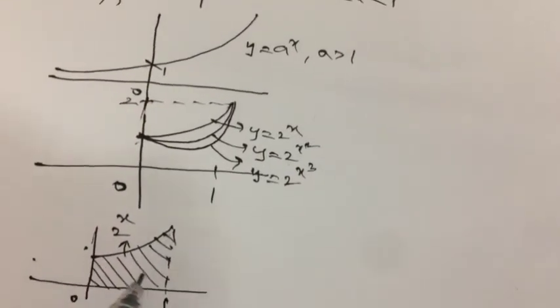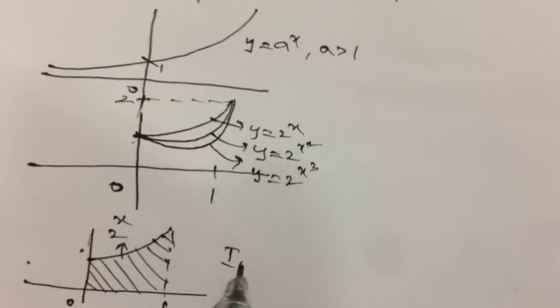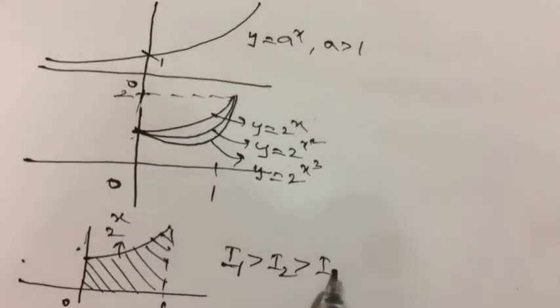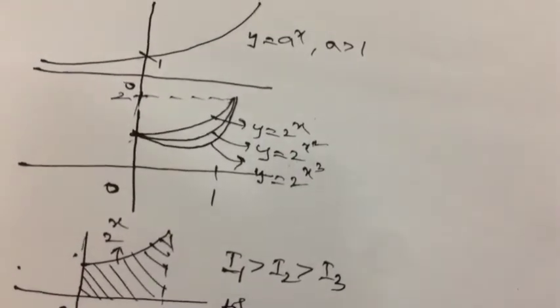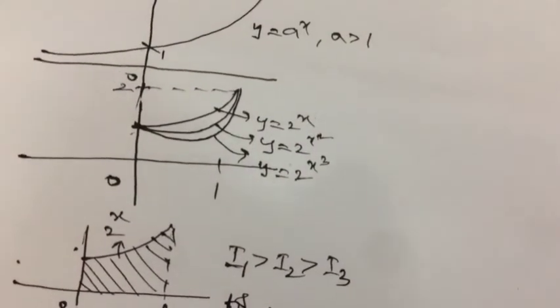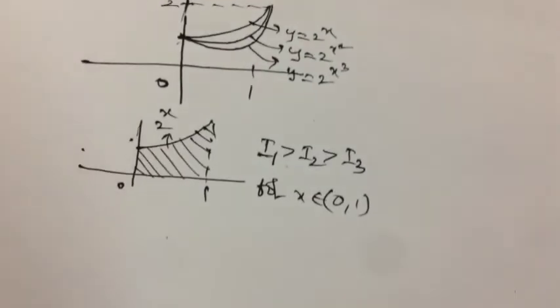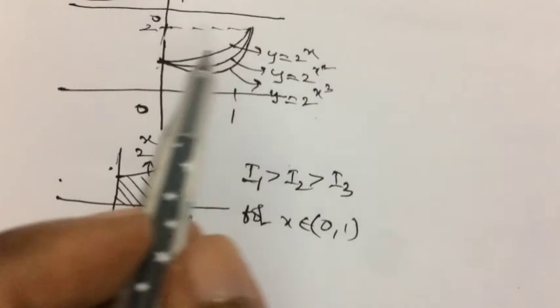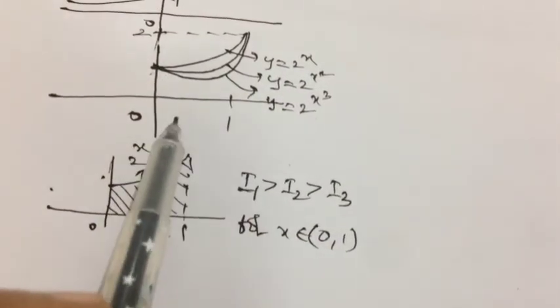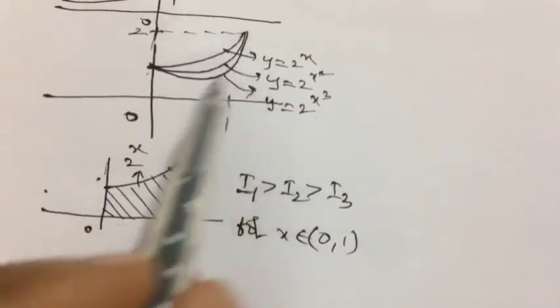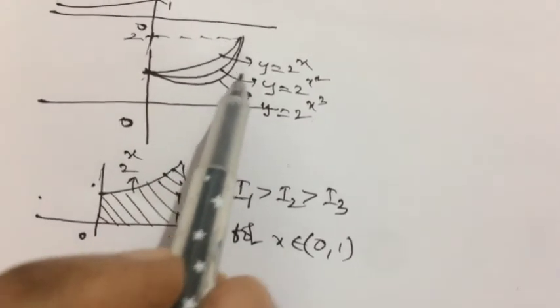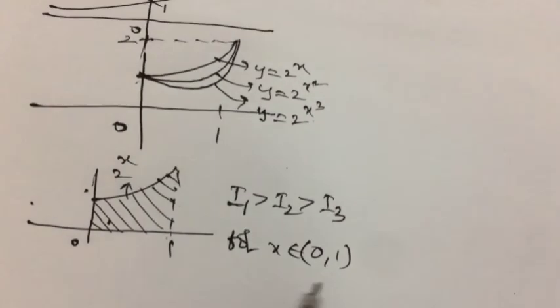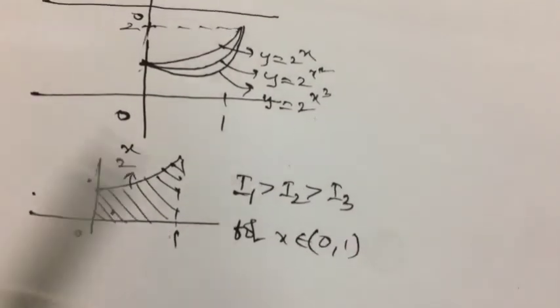So 2^(x²) is still lesser. So from here, I can say that clearly, I₁ greater than I₂ greater than I₃ for x belongs to 0 to 1. Because if you see for 2^(x²), 2^(x³), there also the values of the integrals which are bounded with x axis will be still lesser compared to 2^x, right? And they are in this order. I₁ greater than I₂ greater than I₃.